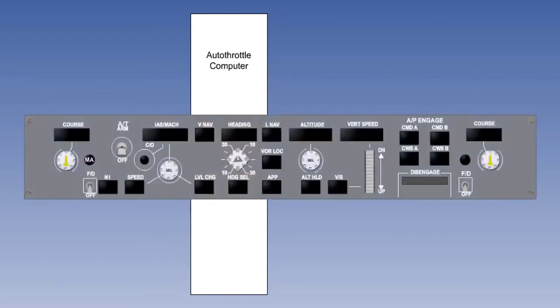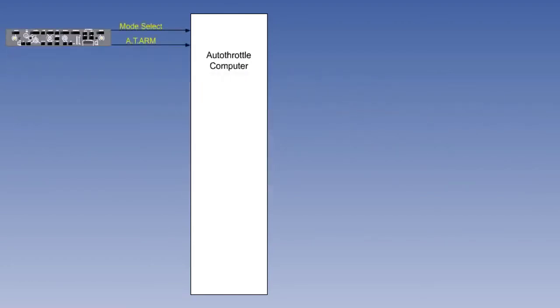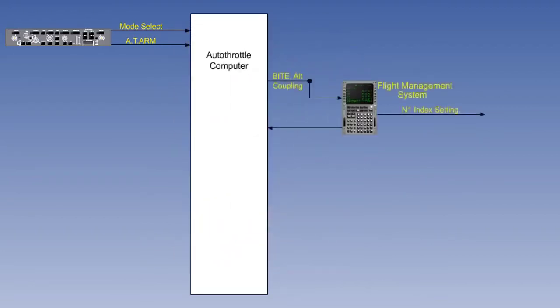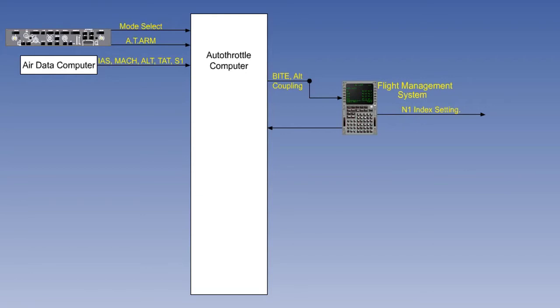You will now be shown the components in a typical autothrottle system, starting with the heart of the system, the autothrottle computer. The autothrottle computer has the following inputs: pilot inputs from the mode control panel, including arming the autothrottle and selecting the modes of operation, and the flight management system or FMS. There are also inputs from various other aircraft systems, including indicated airspeed, Mach, altitude and true air temperature from the air data computer.